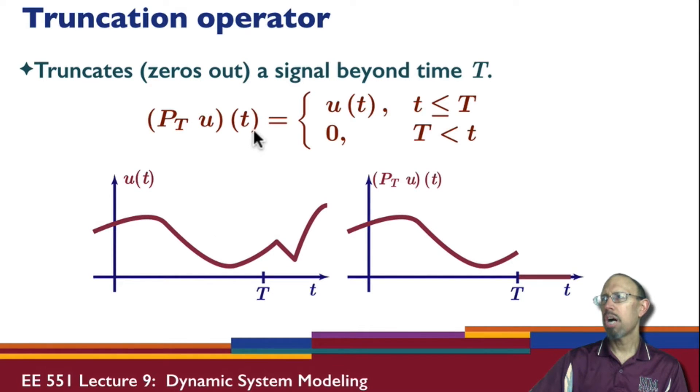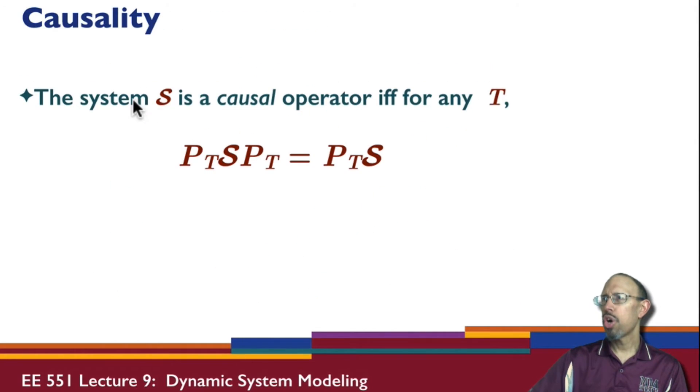We can define something called the truncation operator. That is, you take a signal and at time capital T you chop it off, so it's zero after that. So you have some signal, you chop it off, and at a time beyond capital T it is zero. So this is called the truncation operator. It truncates after time capital T. So you can go through and show that a system is causal if for any T...